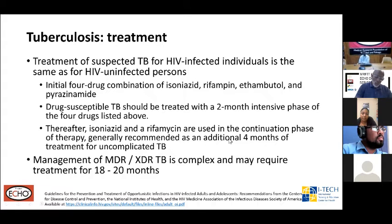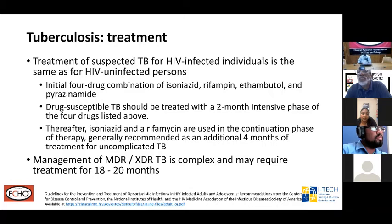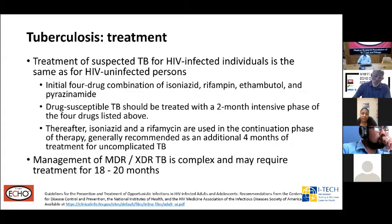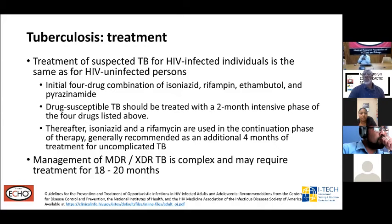In terms of TB treatment, regardless of HIV status, the treatment is more or less the same. Initial four-drug treatment with isoniazid, rifampicin, ethambutol, and pyrazinamide, usually for eight weeks. If TB is drug susceptible, the patient then completes a four-month continuation phase with isoniazid and rifampicin. Depending on the antiretroviral regimen, rifampicin can be substituted with rifabutin. Management of MDR and XDR-TB is very complicated and can take up to nearly two years.